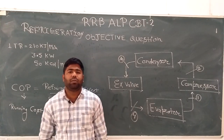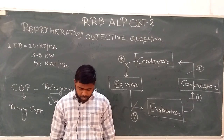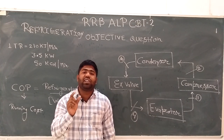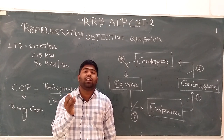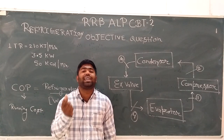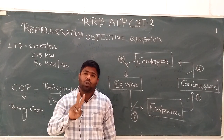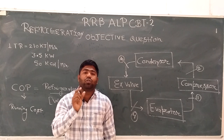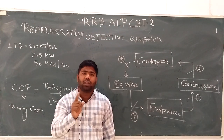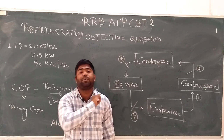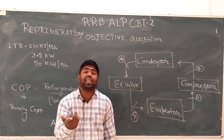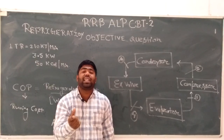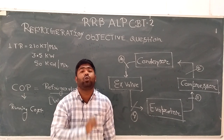Let me tell you some important points. Point 1: At the evaporator exit, the refrigerant state is vapor. Point 2: At the compressor exit, the refrigerant state is superheated vapor. Point 3: At the condenser exit, the refrigerant state is liquid. Point 4: At the expansion valve exit, the refrigerant state is completely liquid or sub-cooled liquid.